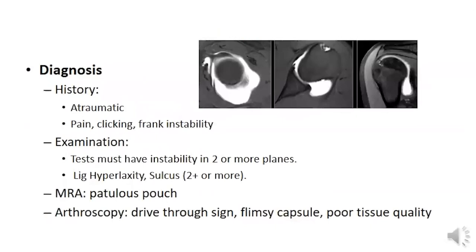There is no history of significant trauma. The patient complains of pain, clicking, and frank instability. Examination must reveal instability in two or more directions with ligamentous hyperlaxity and a sulcus sign of 2-plus or more. MRI arthrogram shows a patulous pouch, and arthroscopy demonstrates a drive-through sign with a flimsy capsule and poor tissue quality.